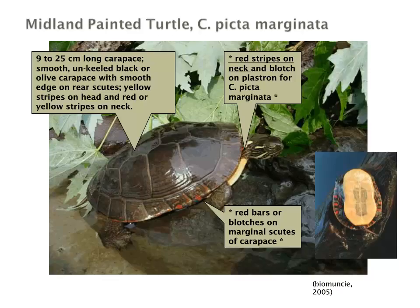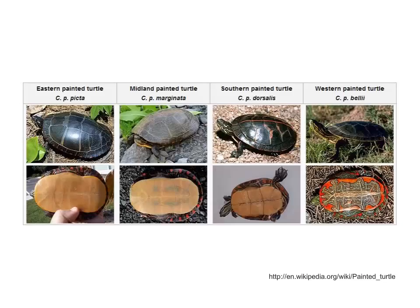The midland painted turtle has a relatively long, unkeeled, black or olive carapace with smooth edges on the rear scutes, yellow stripes on the head, and red or yellow stripes on the neck. The plastron is quite different from the western painted turtle — it's relatively one colour. There are also red bars or blotches on the marginal scutes of the carapace. Here we can see several painted turtle species contrasted.